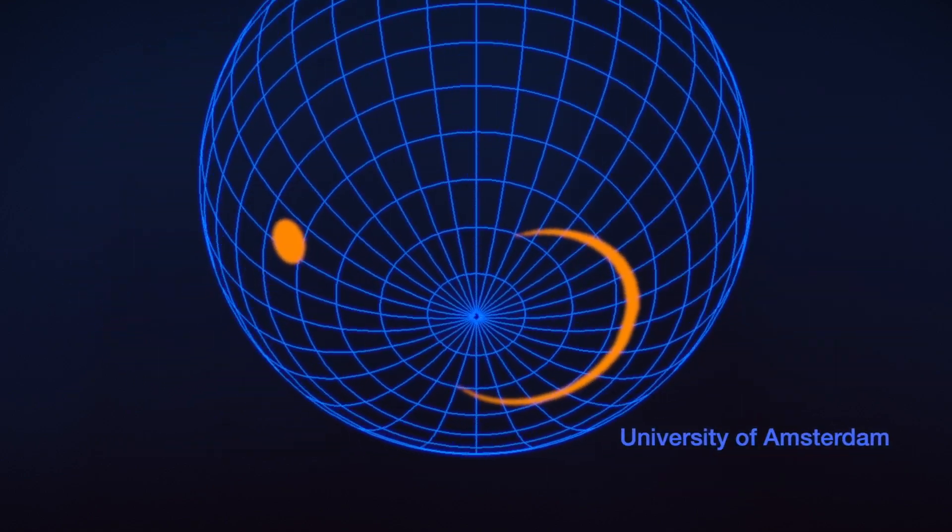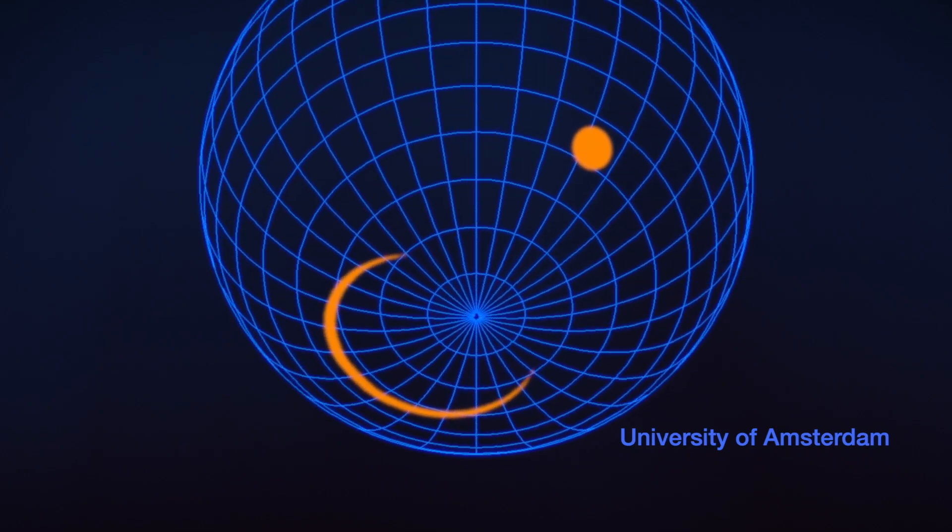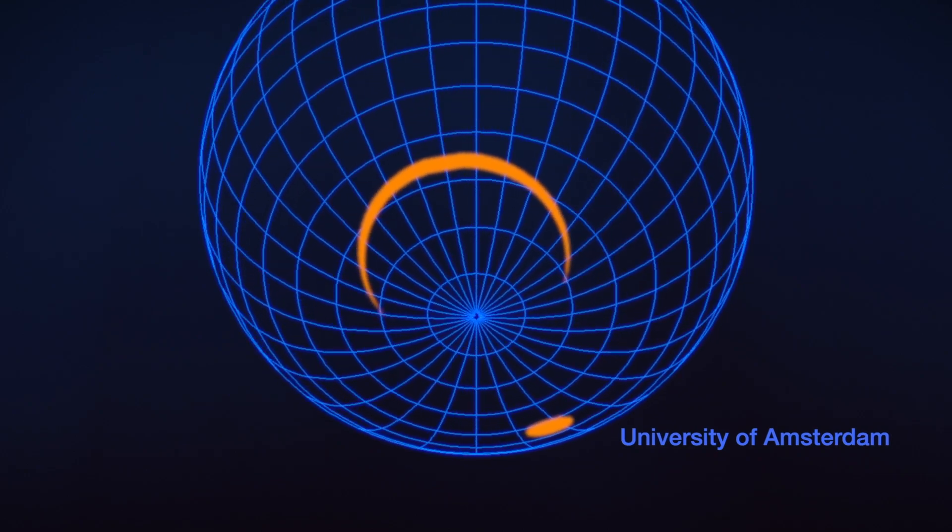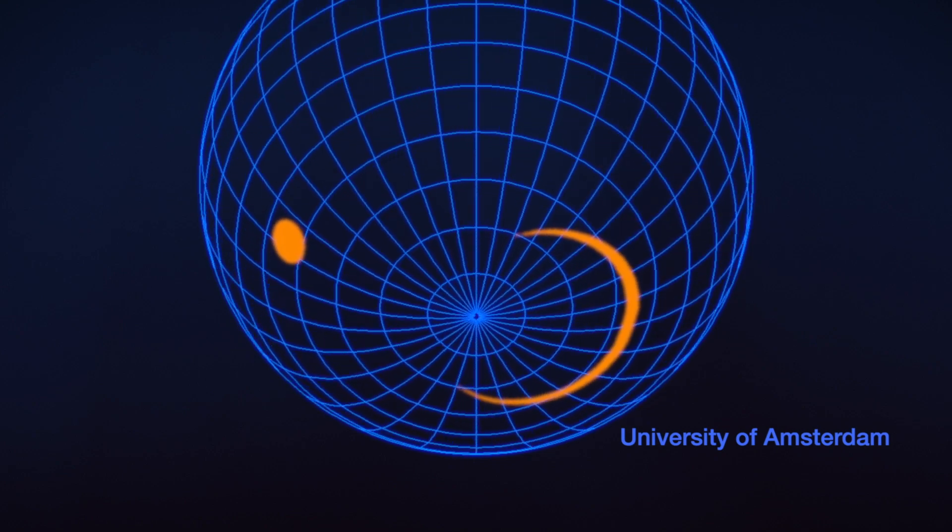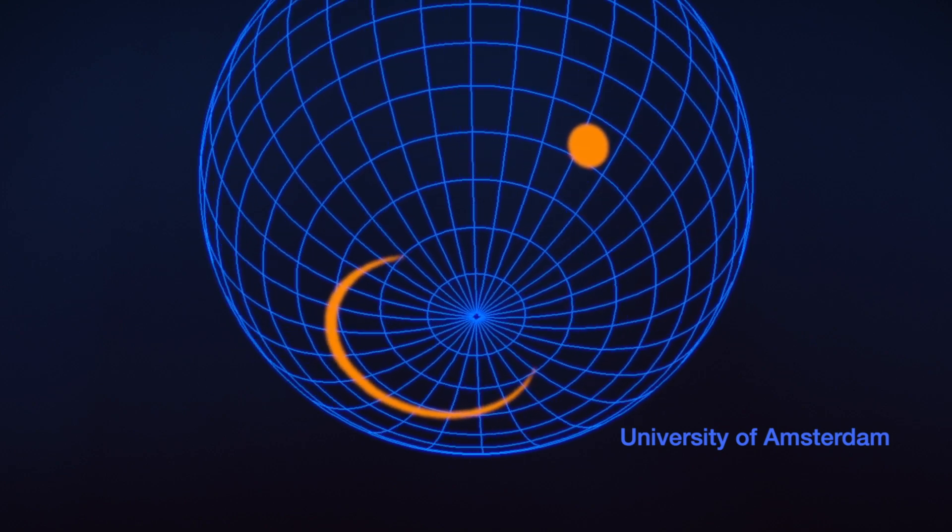One team, led by researchers at the University of Amsterdam, suggests J0030 has one small circular spot and another long crescent-shaped one.